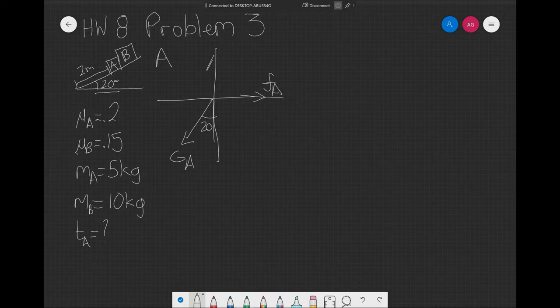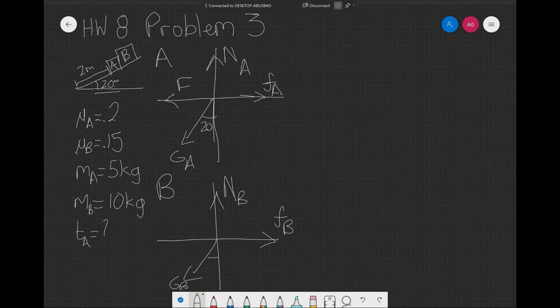Then we have the force of friction, the normal force, and the force that B is applying on A pushing it down. Then we move to B and we have a very similar scenario, with the difference that now the force that's pushing A down is also restricting B to go down further because of Newton's third law—to every action there's an equal and opposite reaction.